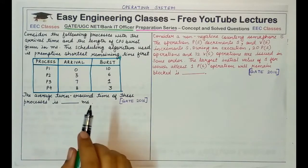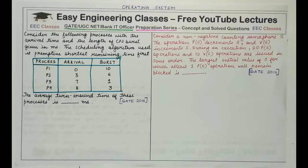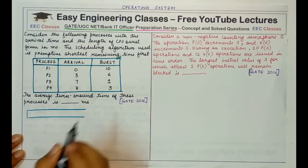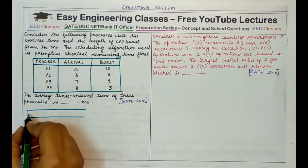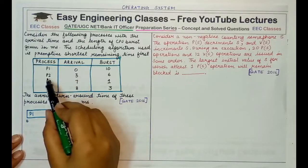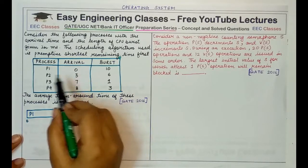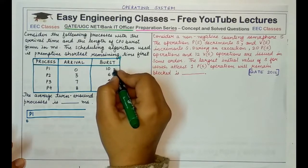Turnaround time is basically completion time minus arrival time. To find the completion time we need to make the Gantt chart. Initially at time zero we have only one process, P1, so we start executing P1 until P2 arrives. P2 arrives at time three, by which time P1 has executed three units and the remaining time of P1 is seven units.